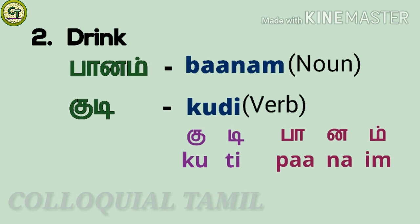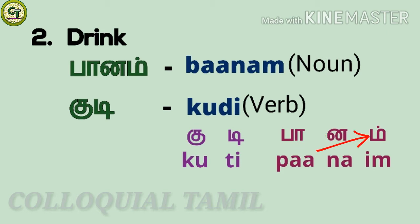For the noun 'drink': baanam. Pa, a long zone letter — while speaking, pa may also sound as ba in some words. Na, a short zone letter. This is small na — while pronouncing it, your tip of the tongue touches the starting roof of your mouth right above the teeth. Then im, a consonant. Together: baanam.